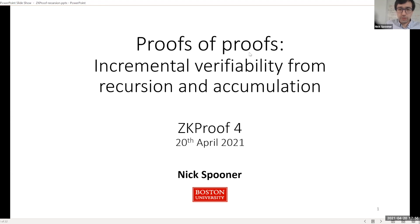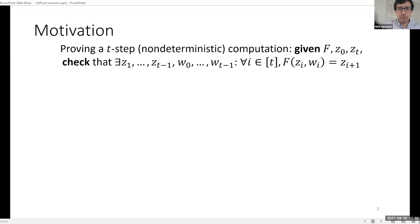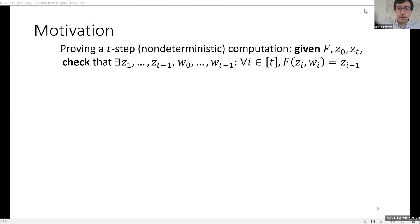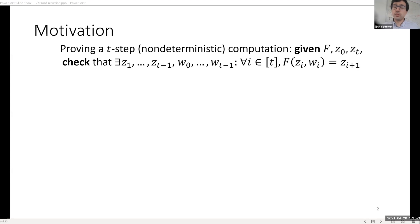Let's start with some motivation for this line of work and then I'll explain how we solve these problems. The problem setup is that you're trying to prove a T-step non-deterministic computation. You have some transition function F, which is like a single step of the computation, some initial state Z0, some final target state Zt, and you want to check that there exist intermediate states Z1 up to Zt and intermediate witnesses W0 up to Wt such that if you apply the transition function to state i and witness Wi, you get the next state Zi+1. This is sort of like a machine computation.